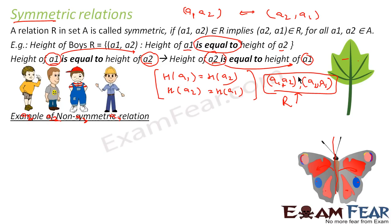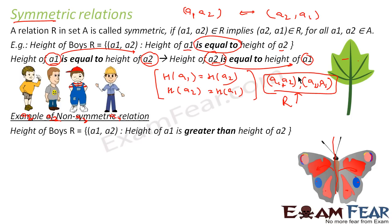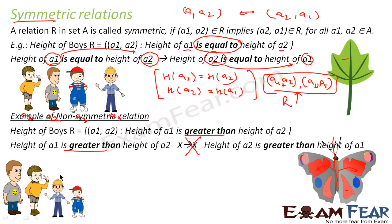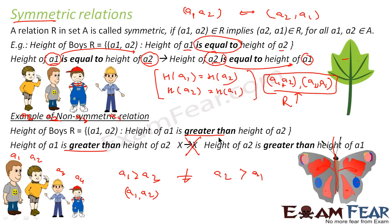To make things clearer, let me explain a non-symmetric relation. Same example — height of boys — but now I say height of a1 is greater than height of a2. If height of a1 is greater than a2, this does not imply a2 is greater than a1. Because this guy is taller than that guy, and that guy is shorter. So if (a1, a2) is part of this relation, then (a2, a1) is not part of the relation.